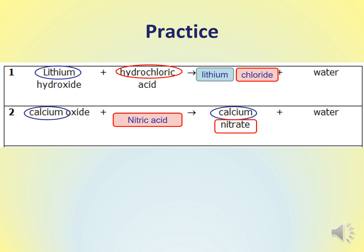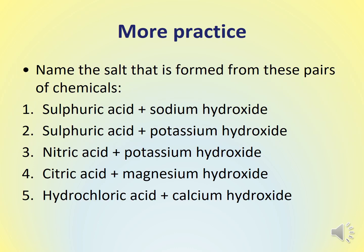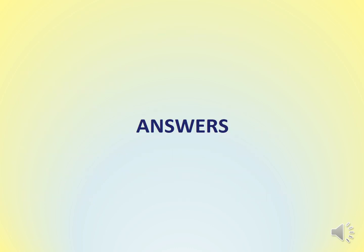Here are some more examples. For each of these, name the salt formed from the pairs of chemicals: number one, sulfuric acid plus sodium hydroxide; number two, sulfuric acid plus potassium hydroxide; number three, nitric acid plus potassium hydroxide; number four, citric acid plus magnesium hydroxide; and number five, hydrochloric acid plus calcium hydroxide. Have a go at figuring out the names of these salts. I'd recommend you pause the presentation so it doesn't skip to the answers, and then restart when you're finished.